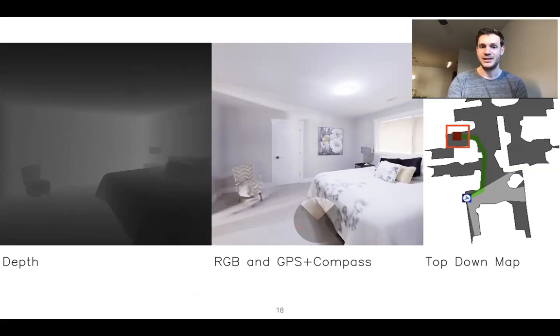Instead the agent must navigate using its sensors which includes a depth sensor, an RGB camera, and a GPS plus compass sensor. The agent utilizes its GPS plus compass sensor to update the goal to be relative to its current location which is why we're visualizing it like that. However the GPS plus compass sensor itself tells the agent its current position and orientation relative to its initial position and orientation at the start of the episode. Using its sensors the agent then navigates to the goal as such.